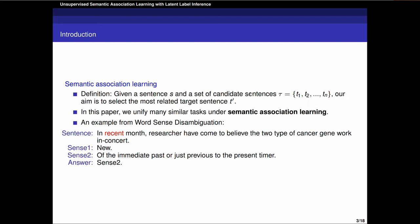The definition of Semantic Association Learning is that, given a sentence S and a set of candidate sentences tau, our aim is to select the most related target sentence T prime in tau by learning the association between them.